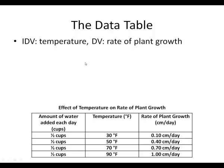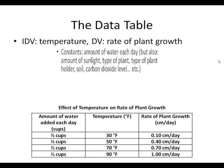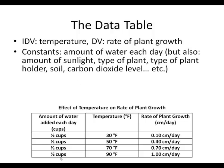Remember, the dependent variable is what you're trying to measure in your experiment. The obvious constant in this table is the amount of water added each day — one half cup for all trials. We also want to keep the same amount of sunlight, the same type of plants, the same plant holder, the same soil, and carbon dioxide level as constant as possible.